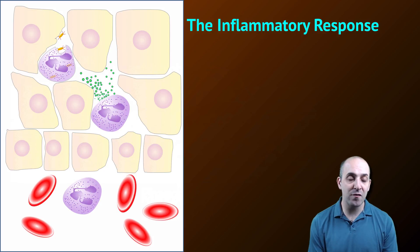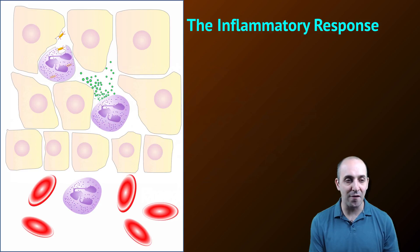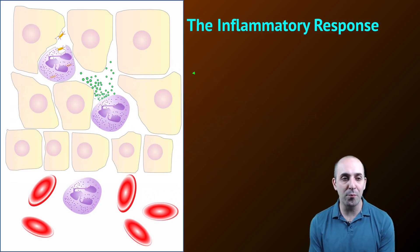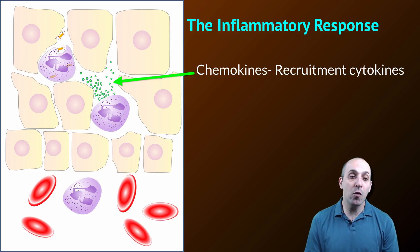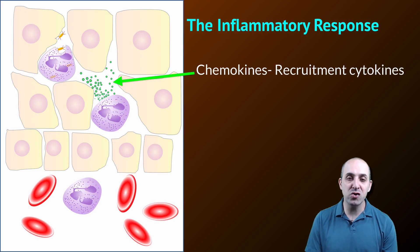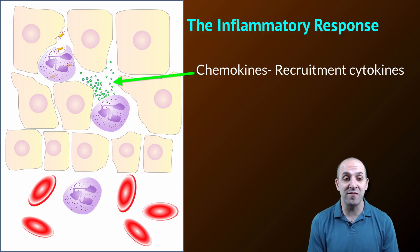Looking at it from a slightly different perspective, we can see pathogens being phagocytized by a white blood cell, which then releases a type of cytokine called a chemokine. Chemokine molecules enter the circulatory system, and macrophages in circulation move to the area where chemokines are being released in order to assist with the phagocytosis of the invading pathogenic organism.